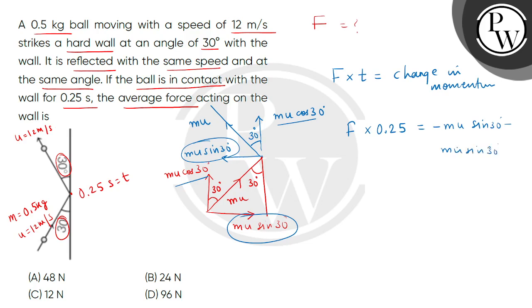So this magnitude will come to us, 2mu multiplied by half, because sin 30 degrees is half. So this is F, and this will be divided by 0.25. Now we will put values, so 2 and 2 cancel. Mass value is 0.5, u value is 12, divided by 0.25.